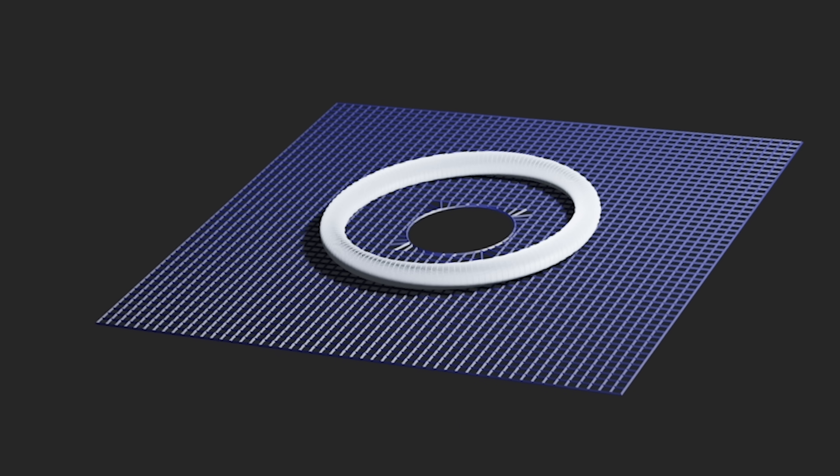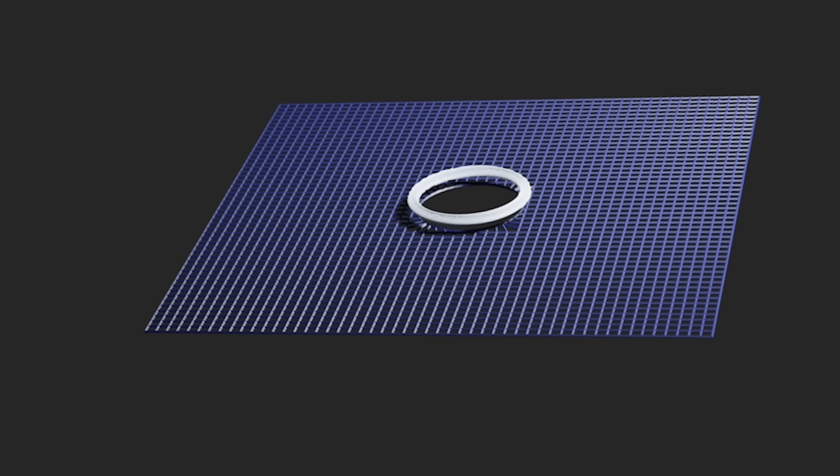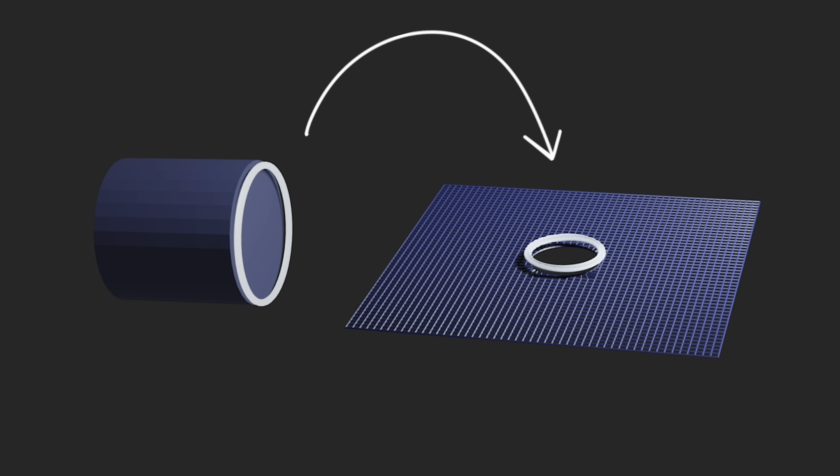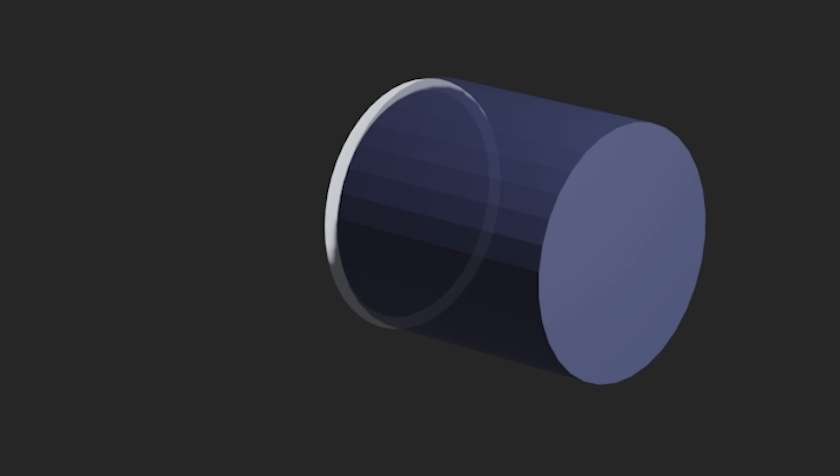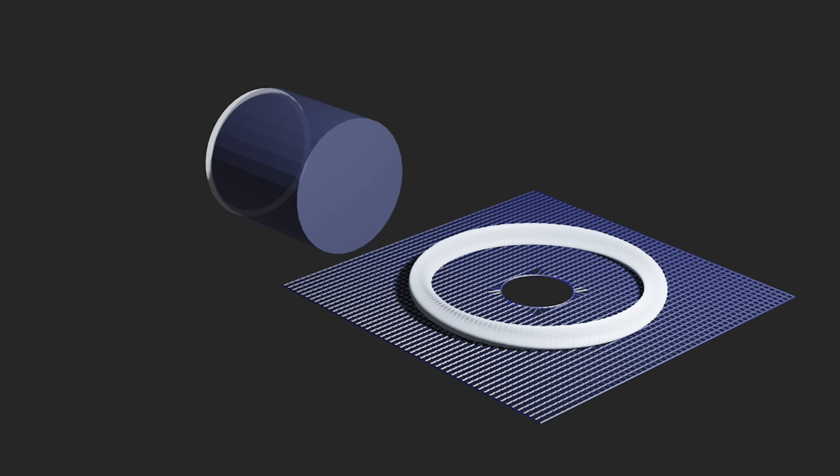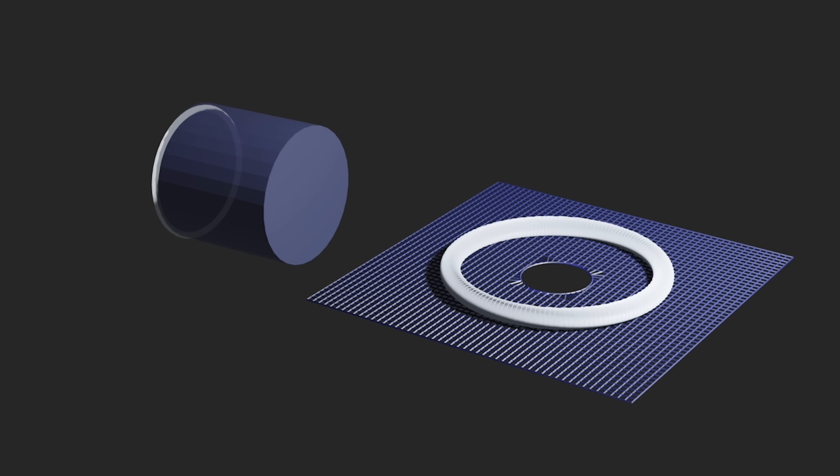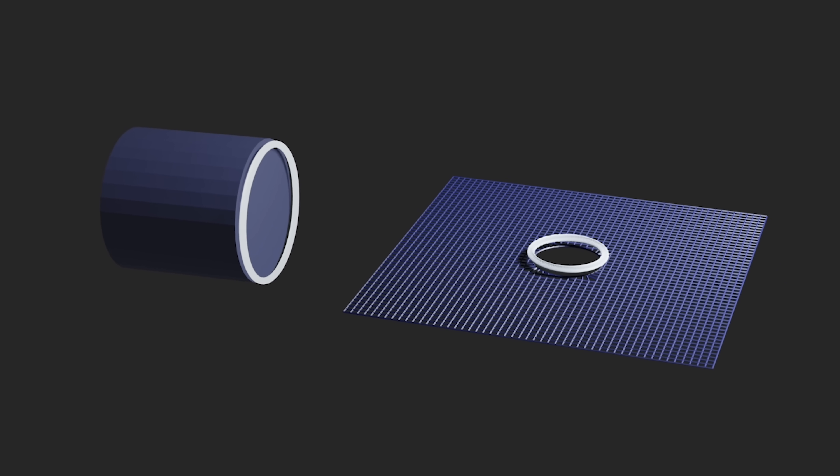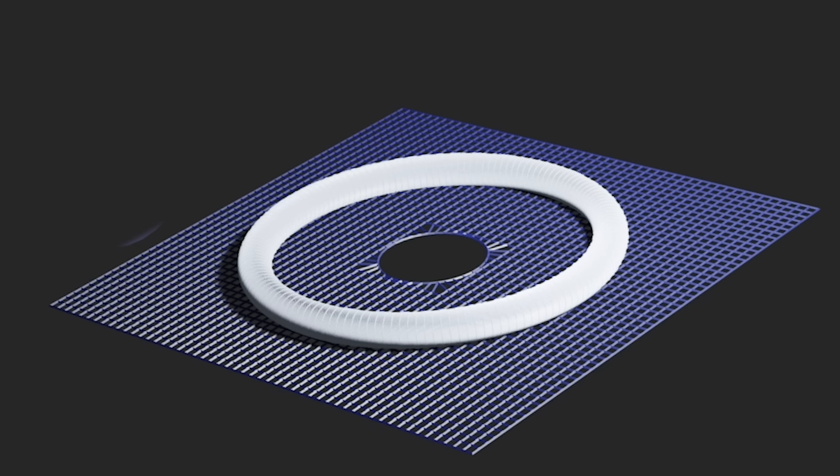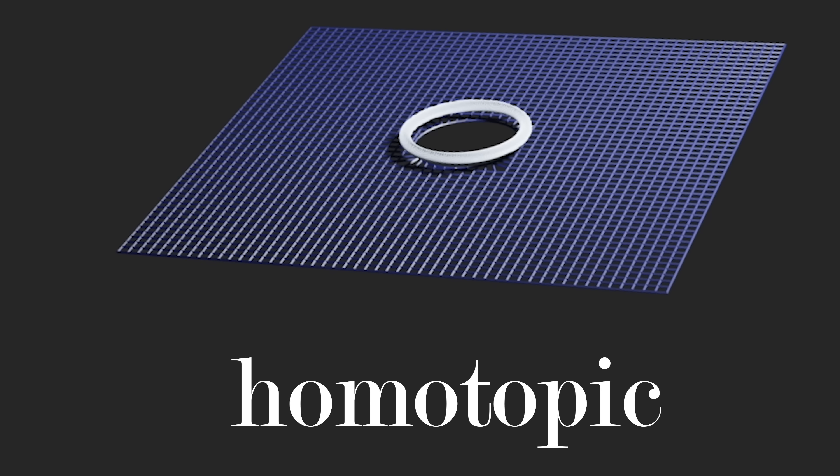Now we need to explain what it means to deform one loop to another. Well, this is given by a continuous map of a cylinder into our space. As the circle moves across the cylinder, the loop deforms from one loop to another. We say that the first loop here and the last loop here are homotopic to one another.